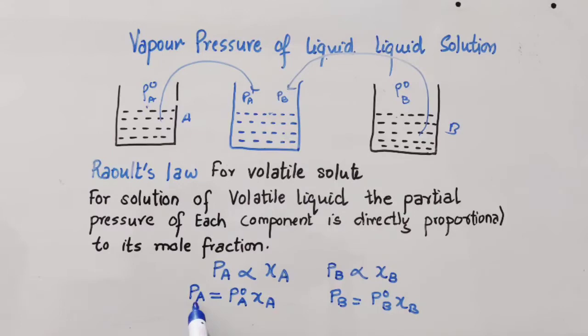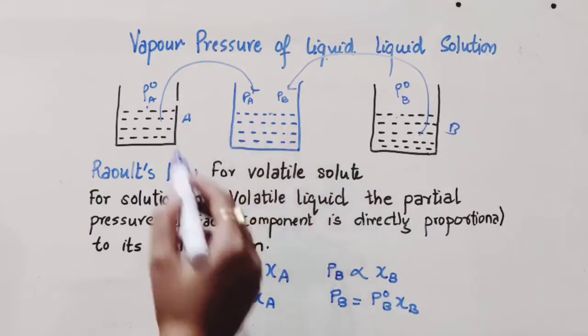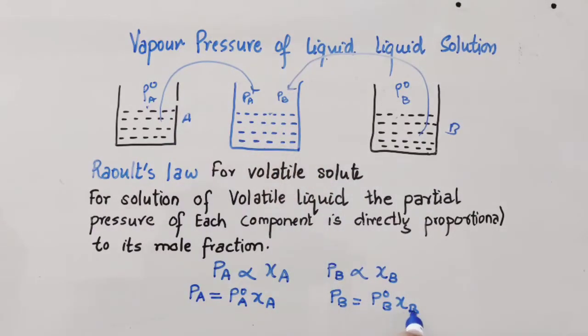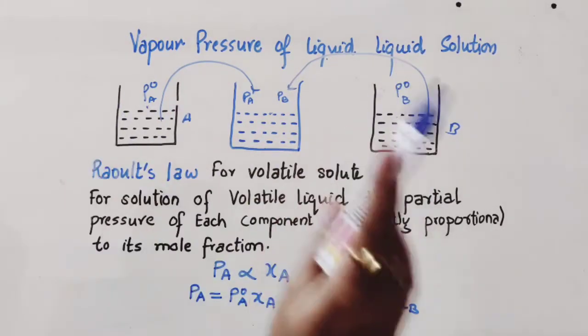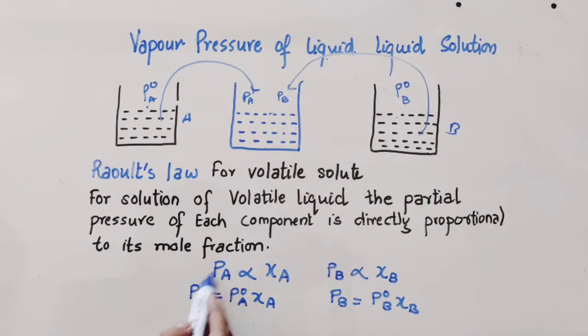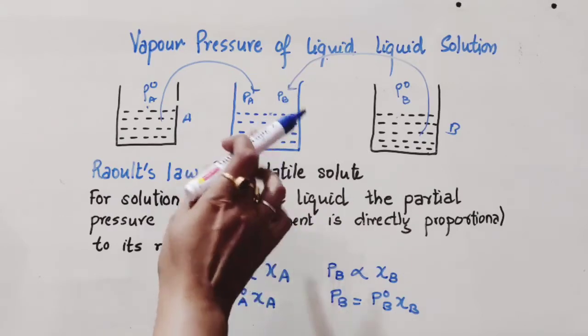The partial pressure of component A depends upon the mole fraction of A that we have taken and the pure pressure of the solvent A. Similarly, pressure of B in this liquid depends upon mole fraction XB, what amount we have taken, and this proportionality constant is the vapor pressure in its pure state. P⁰ here represents the pure state, whereas without the superscript, the pressure given is that of the liquid.